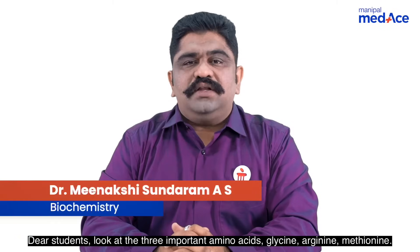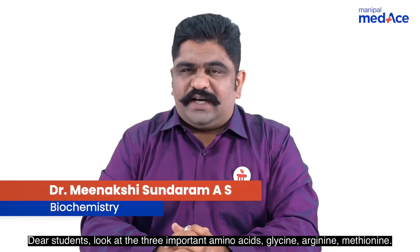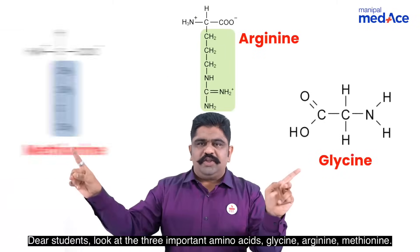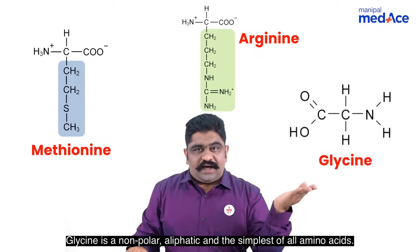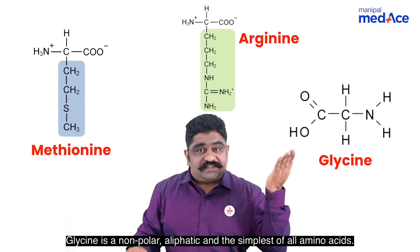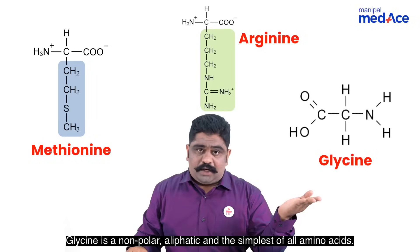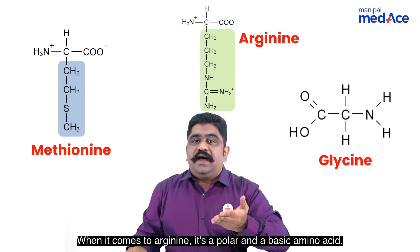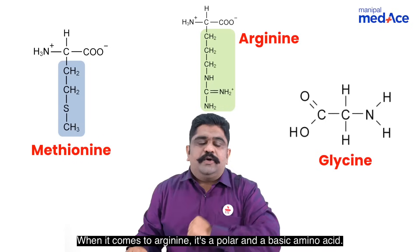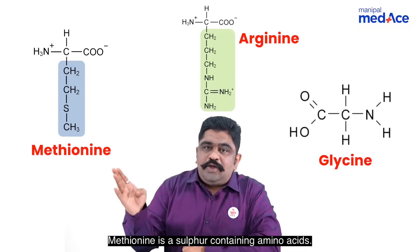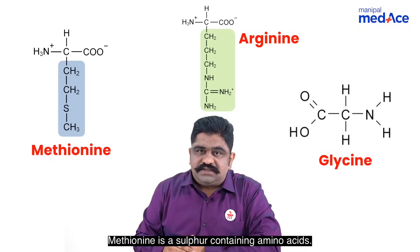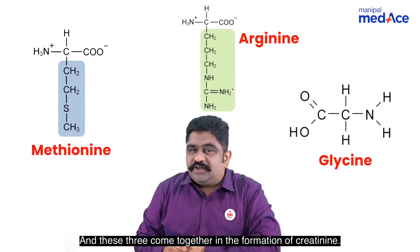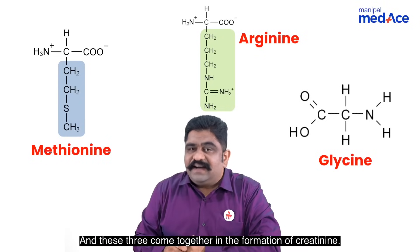Dear students, look at the three important amino acids: Glycine, Arginine, and Methionine. Glycine is a non-polar, aliphatic, and the simplest of all amino acids. When it comes to Arginine, it is a polar and a basic amino acid. Methionine is a sulphur-containing amino acid, and these three come together in the formation of creatine.